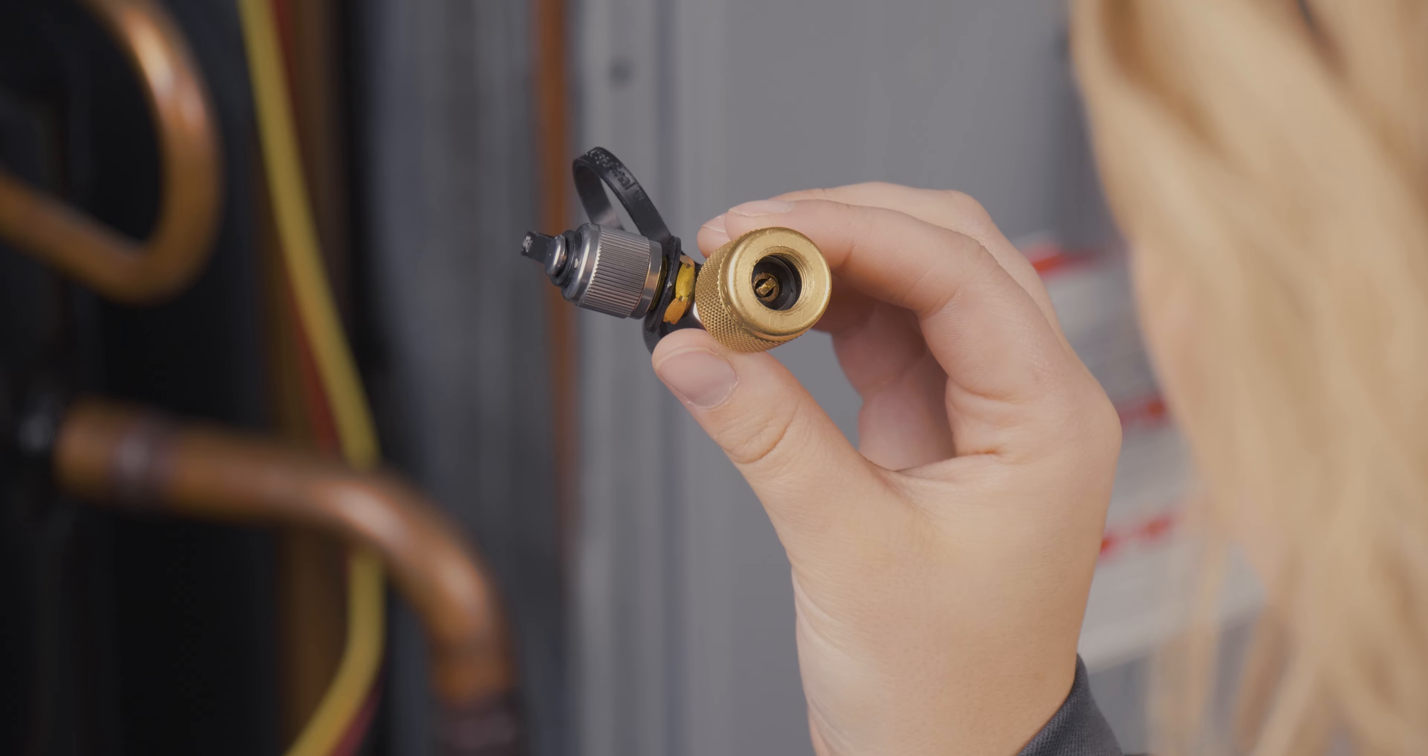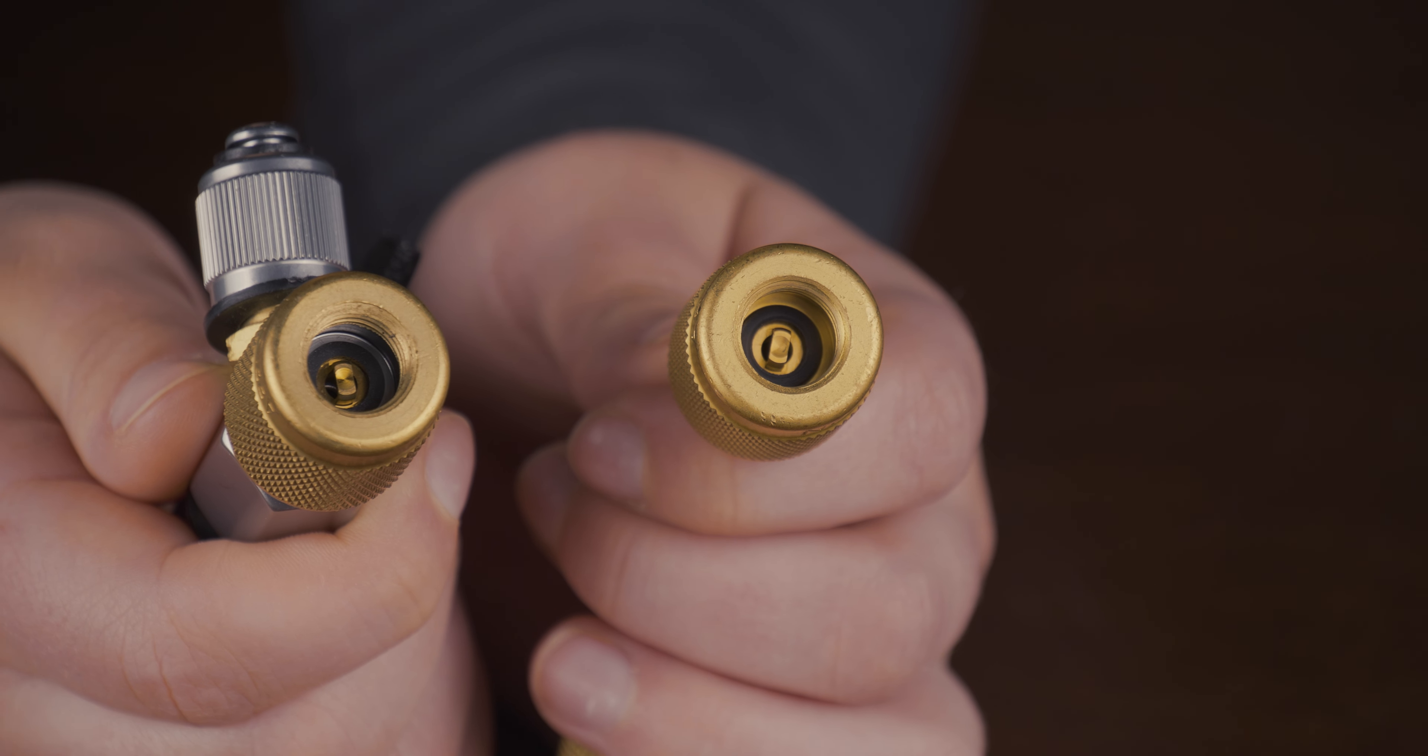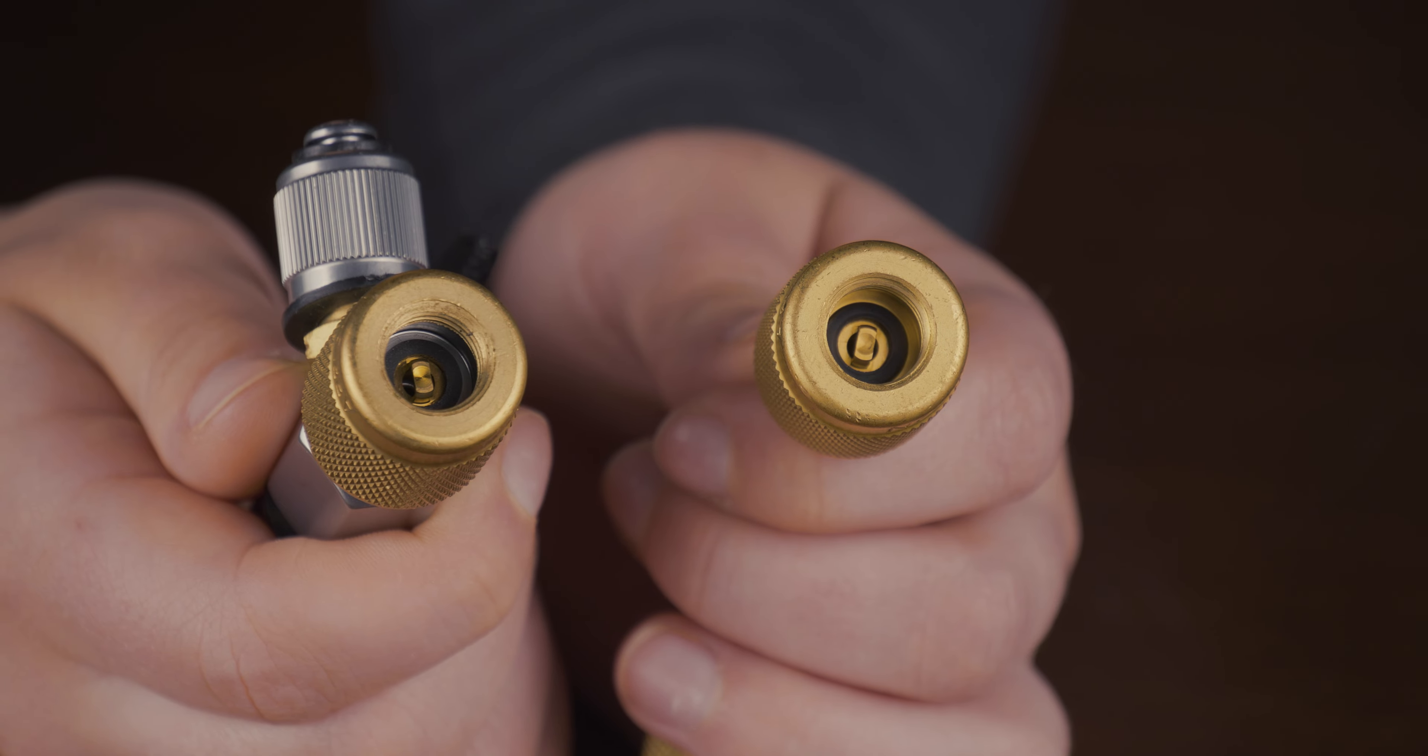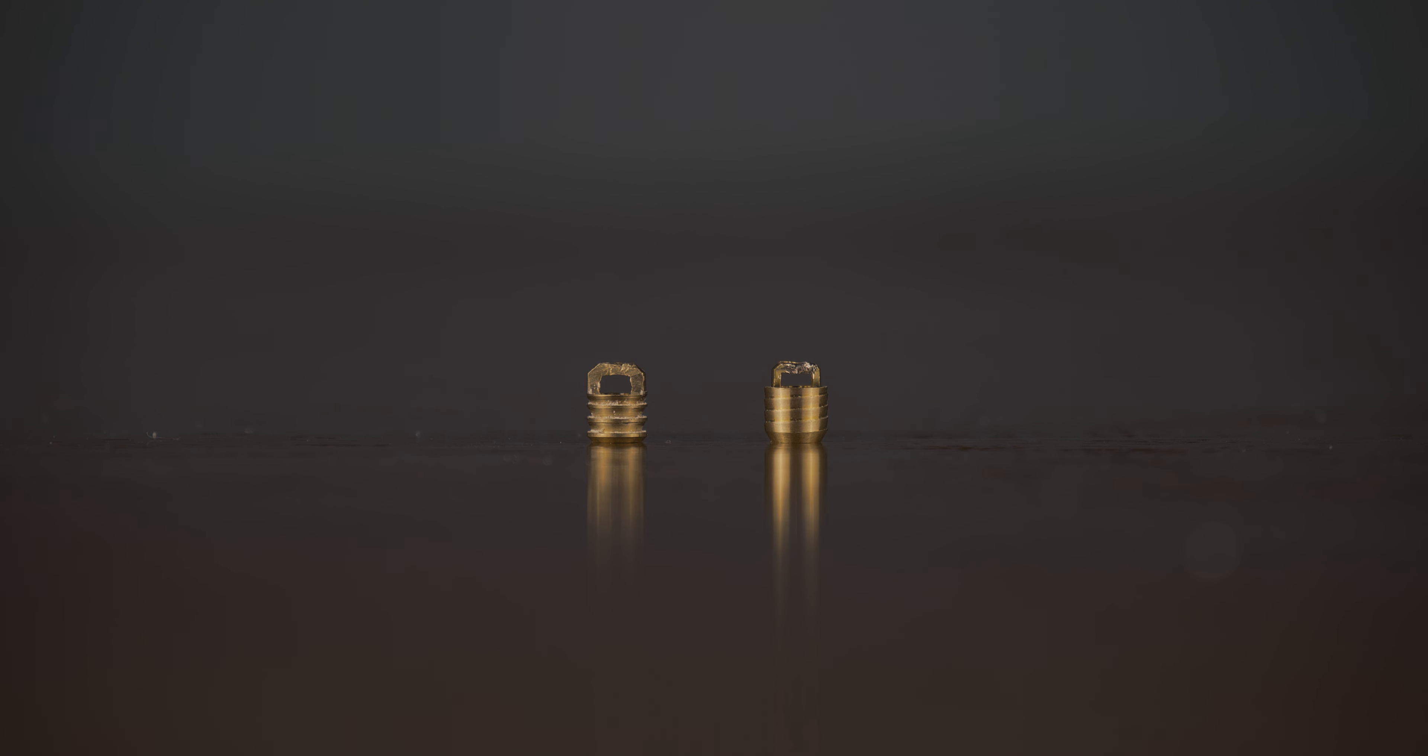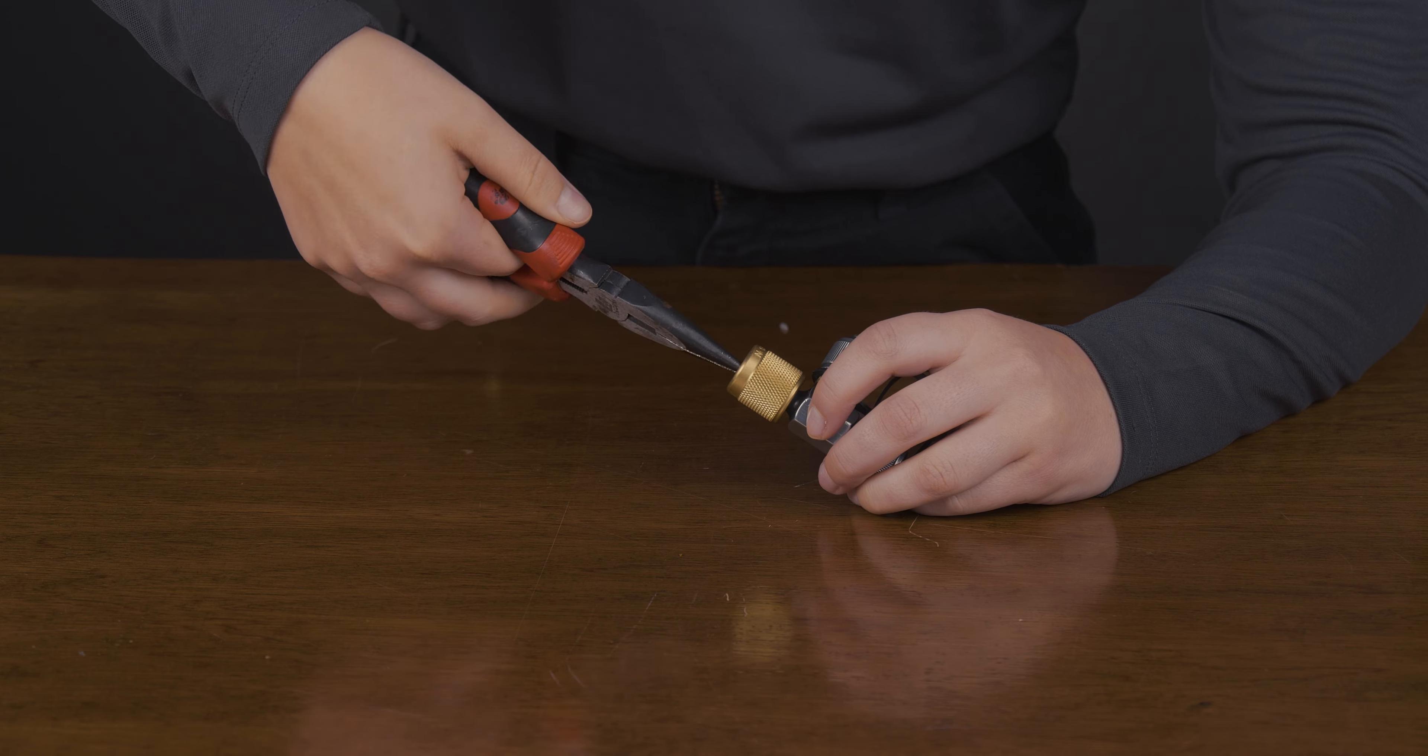Next, check the core depressor height. Appian's charging tees and flare adapter fittings have adjustable core depressors. These core depressors have helical barbs as opposed to standard straight barbs. The advantage of this barb pattern is that it's much easier to adjust the depth of the core depressor.